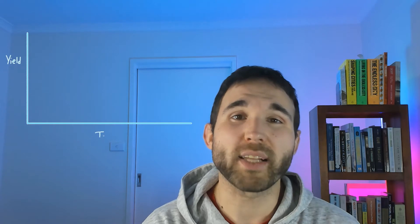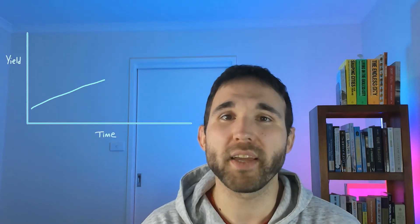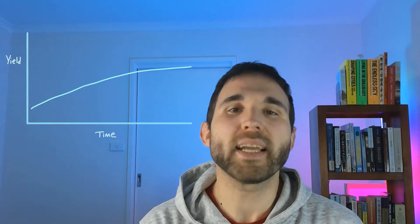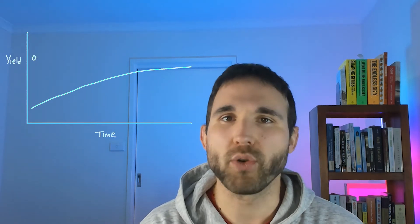So we want to understand what is yield curve control and why do we care — why does it affect us on a day-to-day level? The yield curve can be thought of as: on the y-axis we have interest rates, on the x-axis we have time. Typically you'll have rates from overnight, one year, three year, five year, ten year, all the way up to 30 years — these are interest rate yields on US Treasuries.